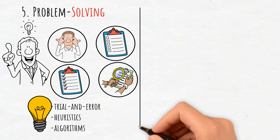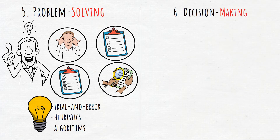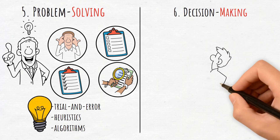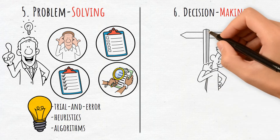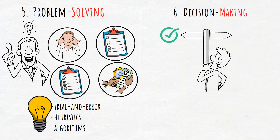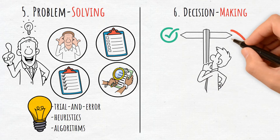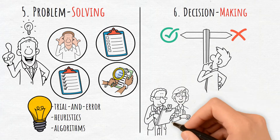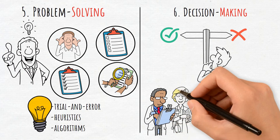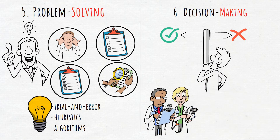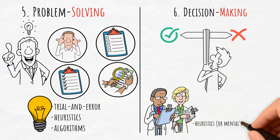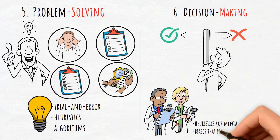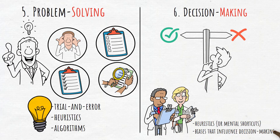6. Decision Making. Decision Making refers to the process of selecting the best course of action among alternatives. Cognitive psychologists examine the heuristics, or mental shortcuts, and biases that influence decision making.